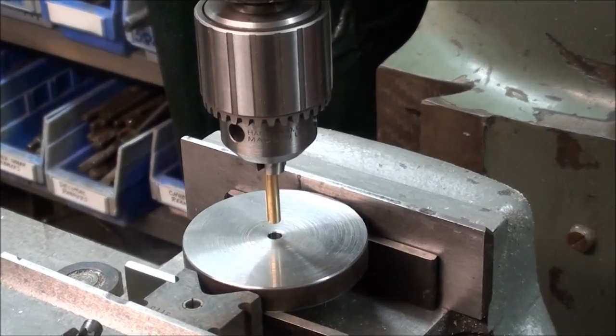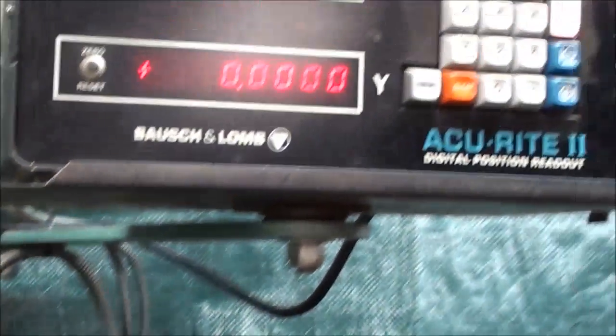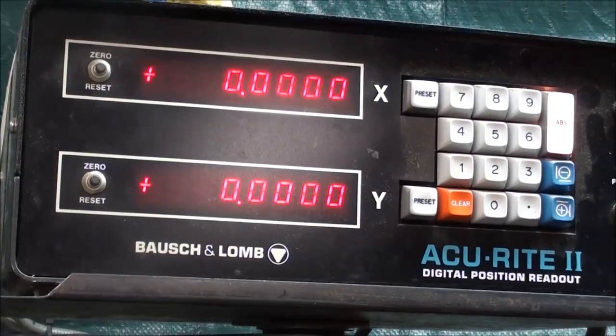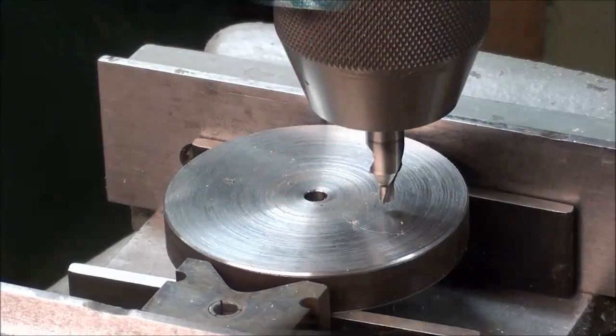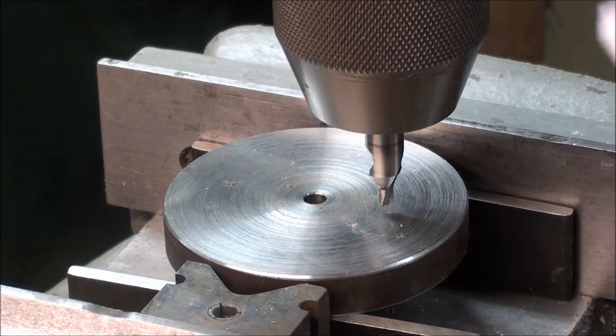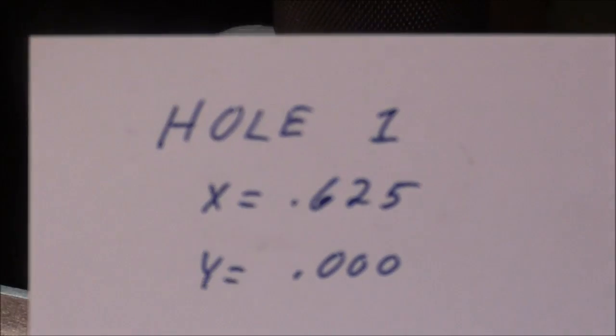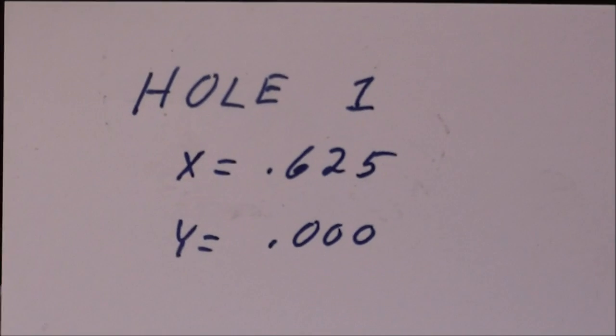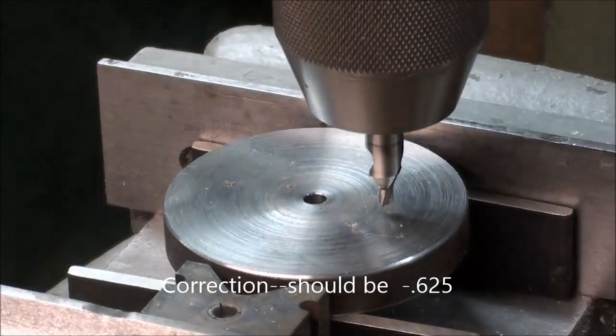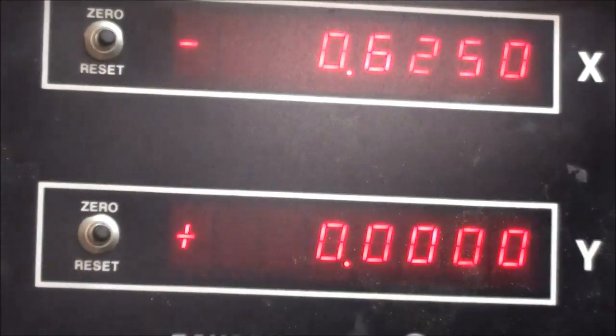And at this point then, I have zeroed out the digital readout because that is my center position. I've moved the table and the drill over into the correct position, and I made an index card for each hole, mainly for instructional purposes, but it is set now at x equals .625. That's a positive 625. And now I'm ready to drill.